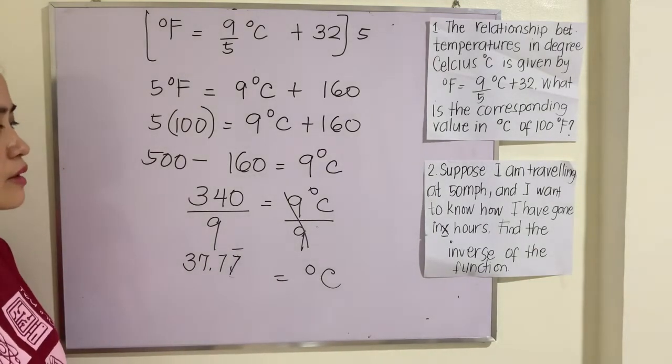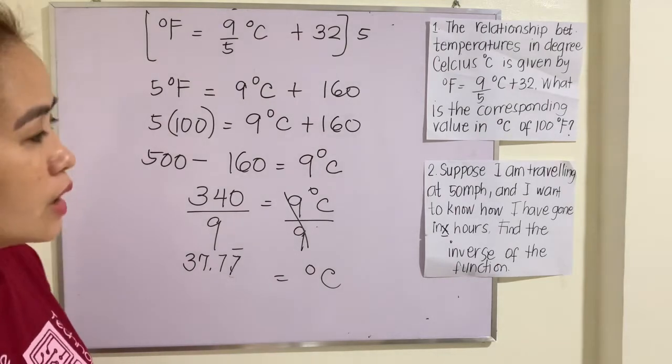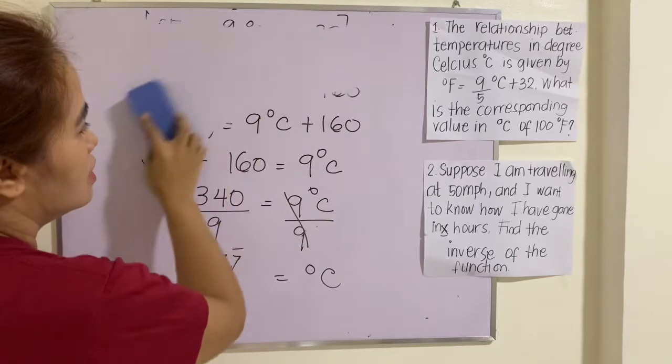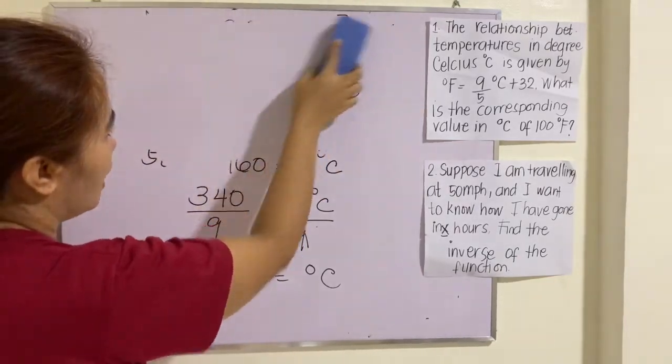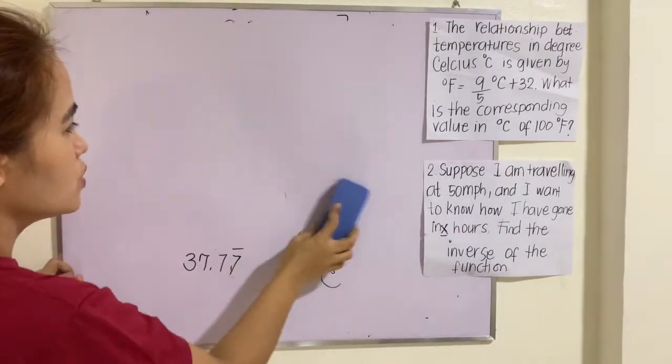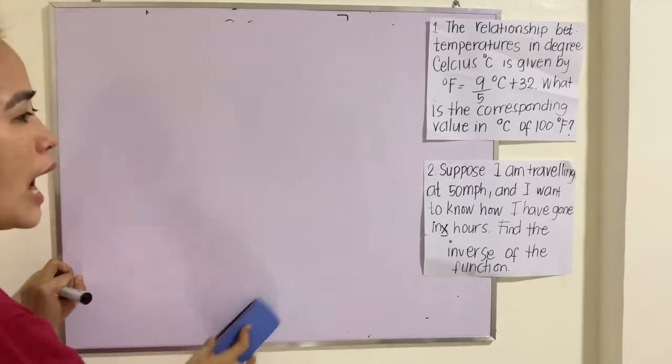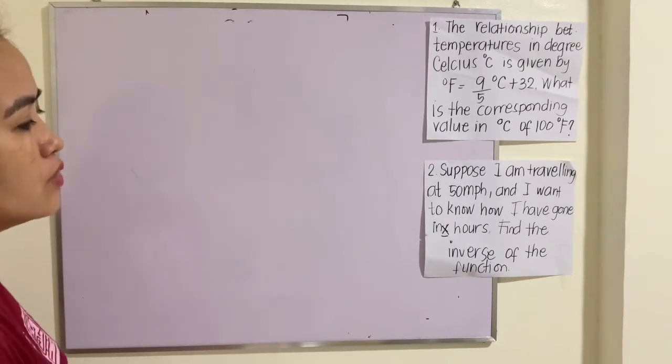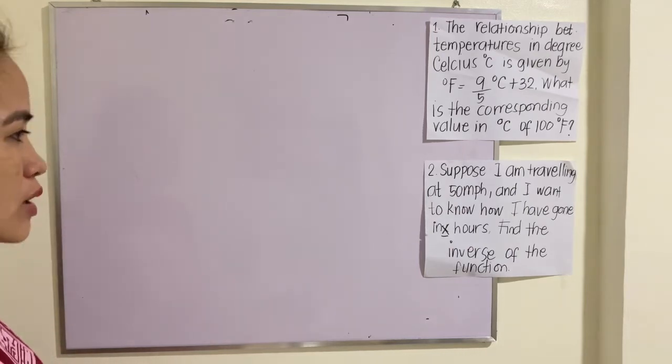That's it. Example number 2. Suppose I am traveling at 50 mph and I want to know how far I have gone in X hours. Find the inverse of the function.